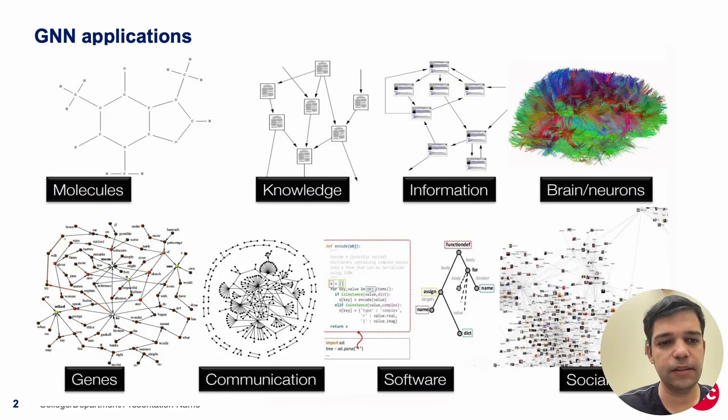Graph neural networks have wide range of applications in genetics, software systems, social networks, knowledge graphs, etc., and therefore they are widely deployed in real world.